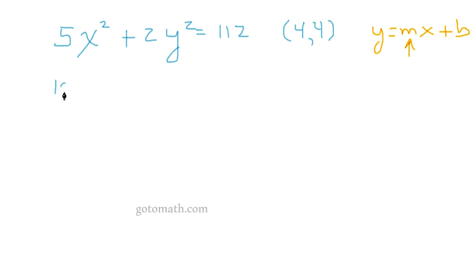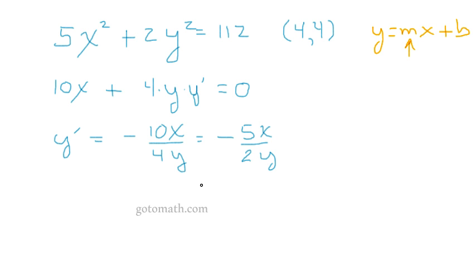So the derivative here is going to be 10x, and then this will be 4y y'. And that equals zero. So now we just solve for y'. So y' equals -10x over 4y. And we can simplify this down to -5x over 2y.